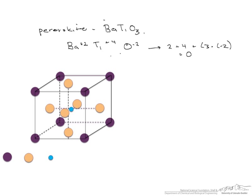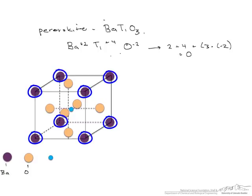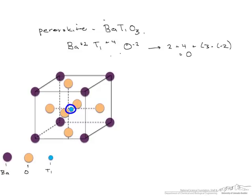So the structure for this is that we have one oxygen here on each face. We have a barium on each corner and finally we have one titanium in the middle.